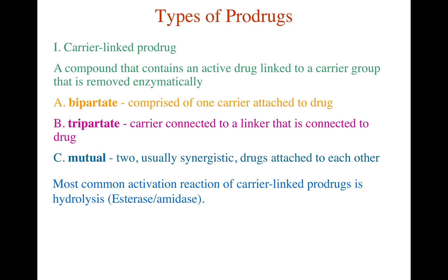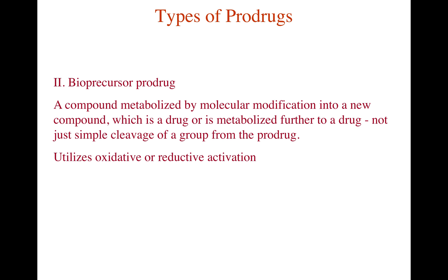The most common activation reaction for carrier-linked prodrugs is hydrolysis, caused by esterase enzymes and amidase enzymes. These enzymes break the linker between the carrier and the active drug, releasing the active drug at the site of action. A bioprecursor prodrug is metabolized by molecular modification into a new compound which is a drug, or is metabolized further into a drug — not just a simple cleavage of a group from the prodrug.